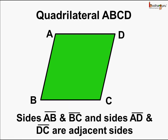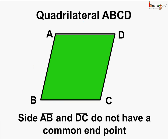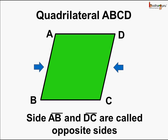Same way, side AB and side BC with the common end point B are adjacent sides. Also, side AD and side DC have a common end point D. Hence, these two sides are also adjacent sides. Now if we talk about side DC and side AB, they do not have a common end point. Such sides — like side AB and side DC — are called opposite sides, as they do not have a common end point.